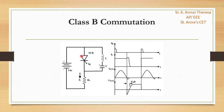If the SCR is triggered, then the resulting current has two components: first, the constant load current flowing through the RL load, and second, a sinusoidal current flowing through the resonant LC circuit. Then the capacitor charges up with the negative upper plate, and the total current flowing through the SCR becomes zero.